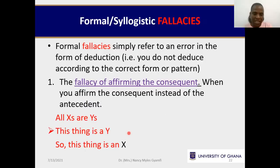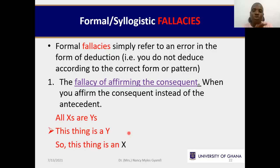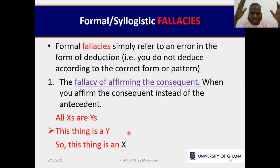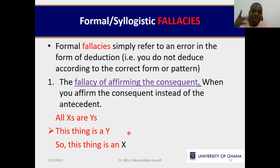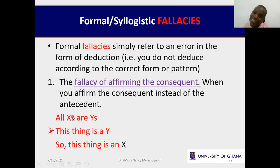Now we can look at the fallacies. Formal fallacies simply refer to an error in the form of deduction — you do not deduce according to the correct form or pattern, and we label that a formal fallacy. This is not an informal fallacy like what we see broadly in Unit 10. Here, there are forms or patterns you should follow, and if you deviate from that form, we have common deviations that are so close to the original they have attained names for themselves.